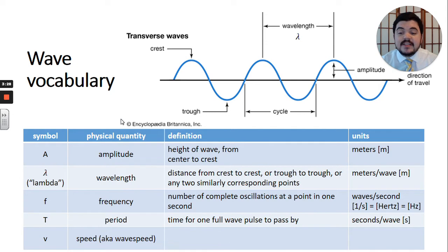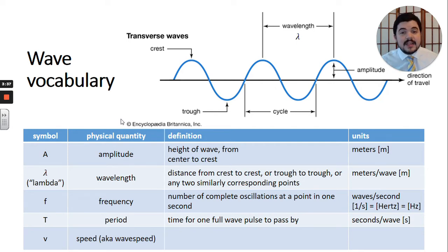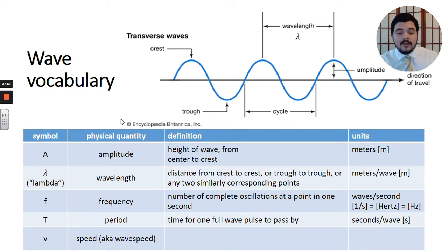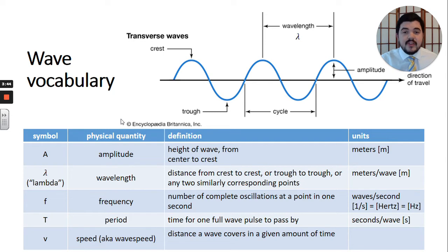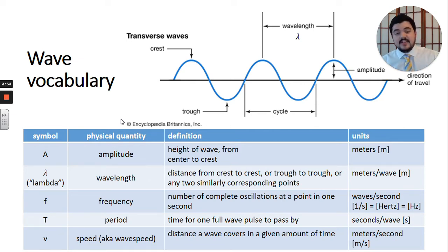The last quantity in this table is speed, also sometimes called wave speed. The symbol V is used as always for all of our speeds. It's the distance that a wave covers in a given amount of time, as any good speed definition ought to be, and so it has units of meters per second — distance per time.